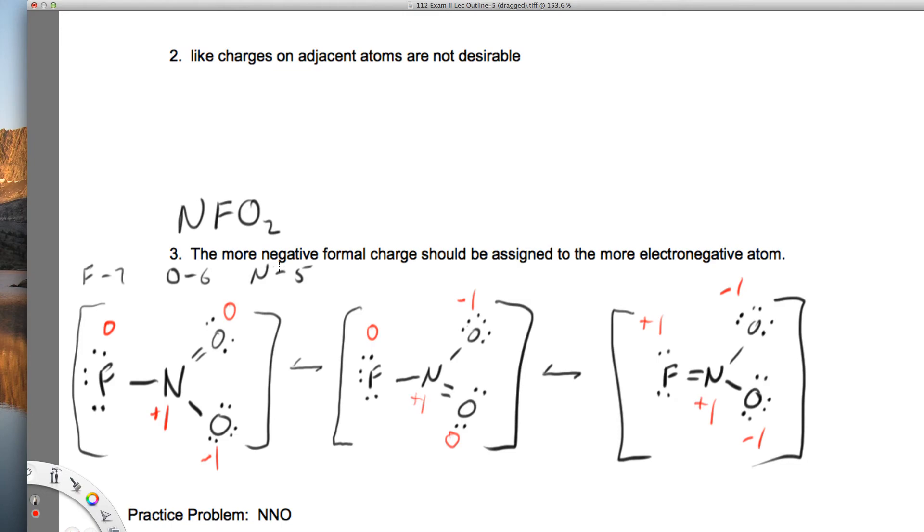Also, the more negative formal charge should be assigned to the more electronegative atom. What is the most electronegative atom here? It's going to be fluorine. We use the periodic table to tell. You will see the more negative formal charge. Here, fluorine is plus one. And here, fluorine is zero in both of these.